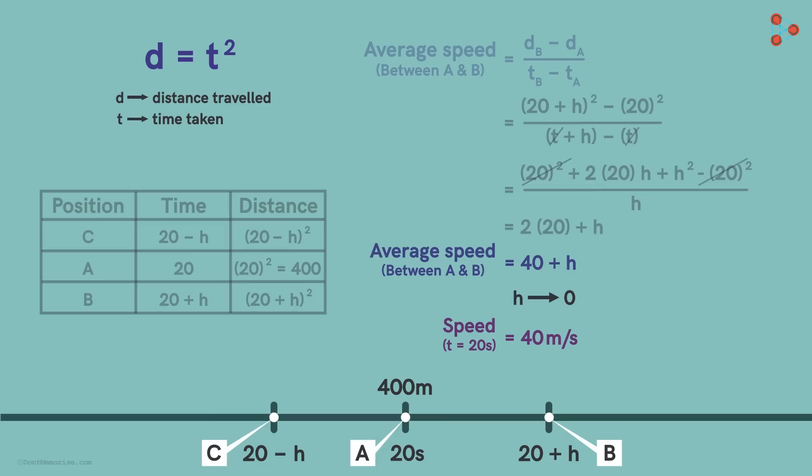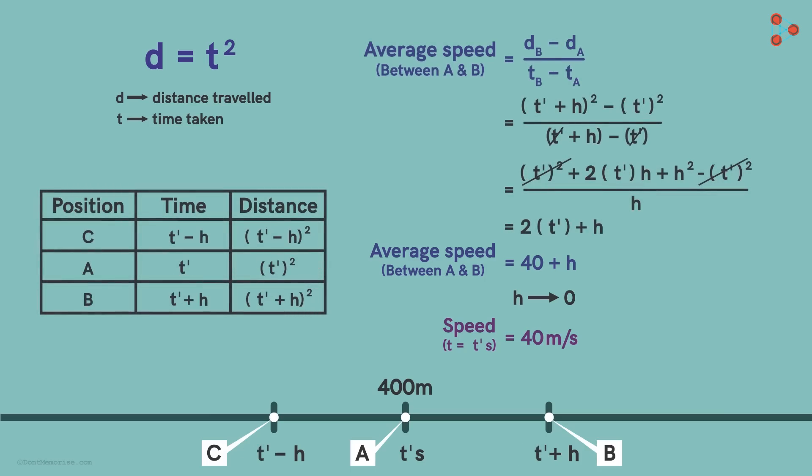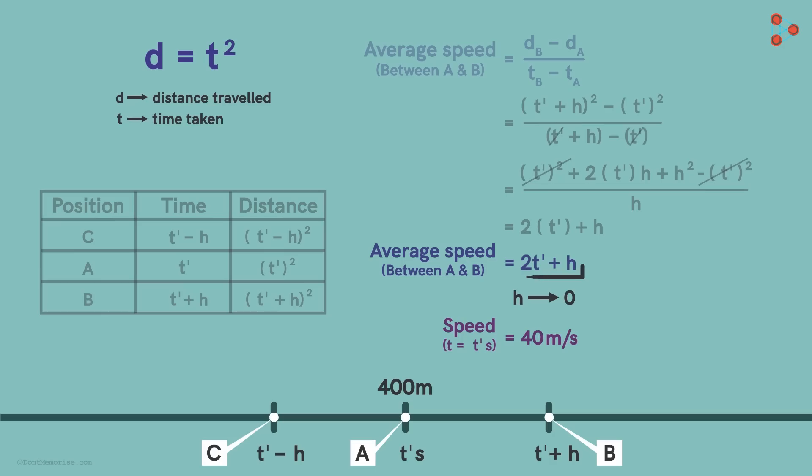Let's say we want to find the speed at an arbitrary instant. We denote this by variable t-dash. Now instead of 20, we can substitute t-dash everywhere here. We get the average speed as 2 times t-dash plus h. Then we will get that speed at time t-dash to be 2 times t-dash.